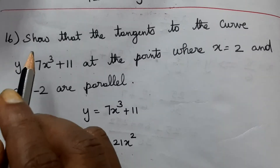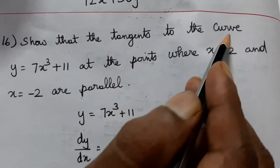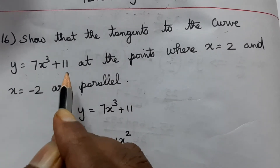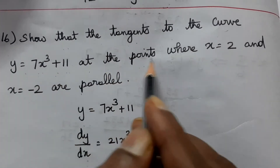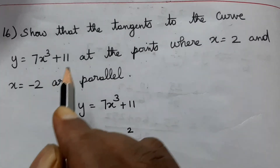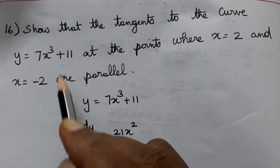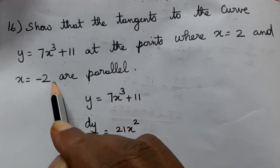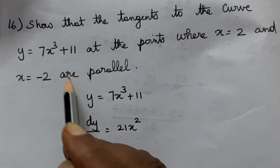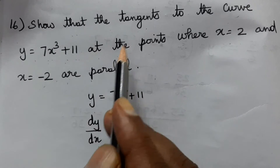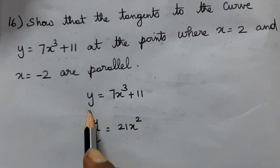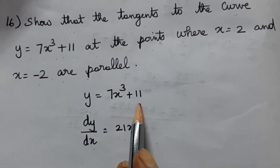Problem 16: Show that the tangents to the curve y = 7x³ + 11 at points where x = 2 and x = -2 are parallel. We need to prove the tangents are parallel at both points. For the curve y = 7x³ + 11, dy/dx = 21x².